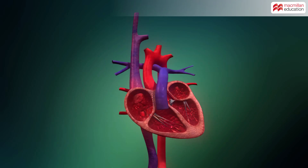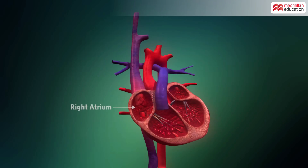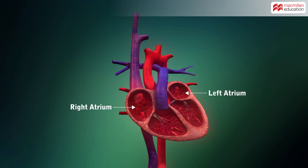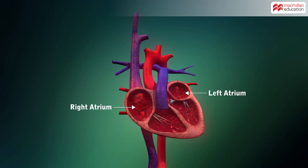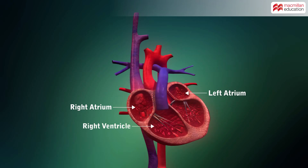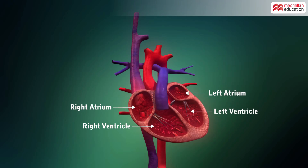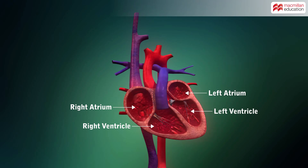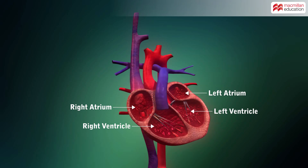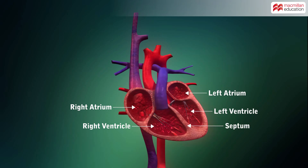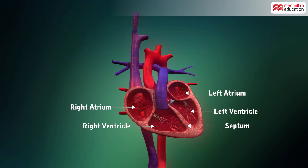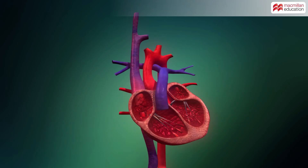There are four chambers in the heart: the upper two chambers called the atria and the lower two chambers called the ventricles. The left chambers of the heart are separated from the right chambers by muscular walls called the septum.